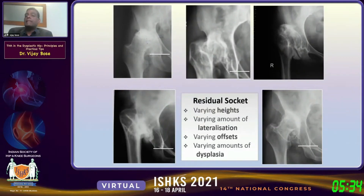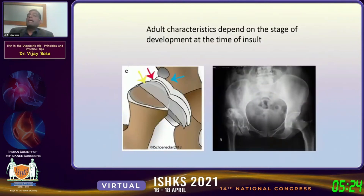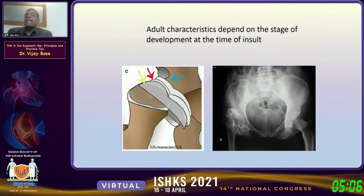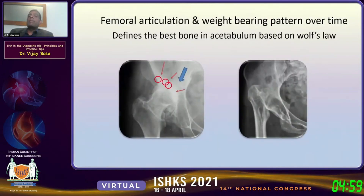Dysplasia comes in various forms: varying heights, lateralization, offsets, and amounts of dysplasia, so everything cannot be put in the same bucket. Some important points people may not be aware of: adult characteristics of dysplasia depend on the stage of development and time of insult. What is fascinating is that the acetabulum will always be a mirror image of the femoral head, so when you remove the head of a dysplastic hip, you know how to reconstruct the socket.